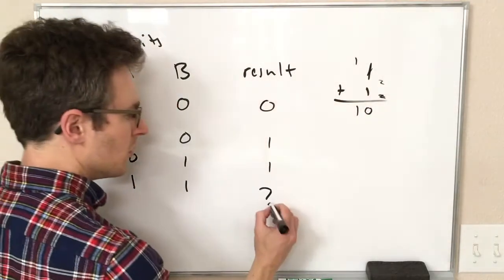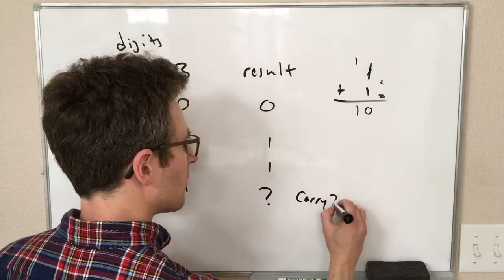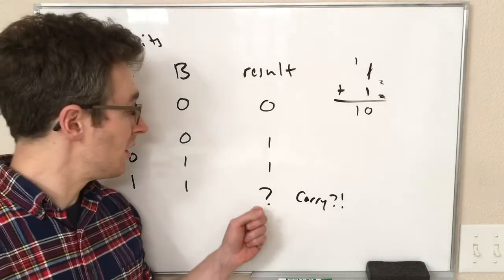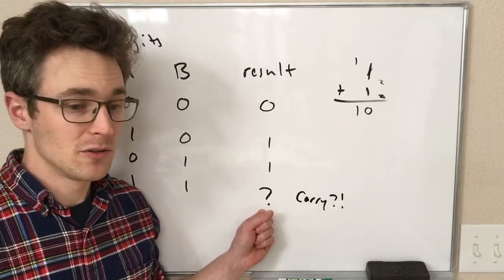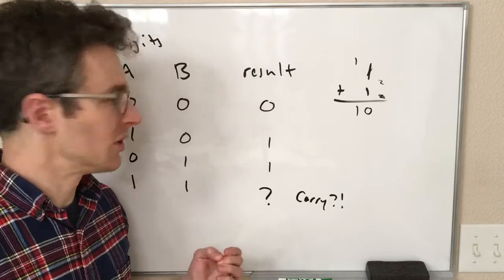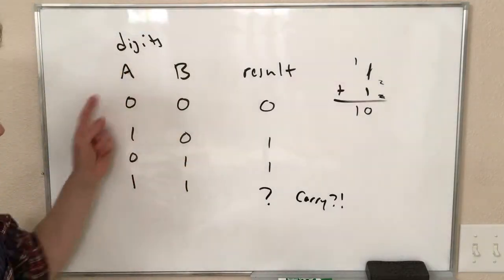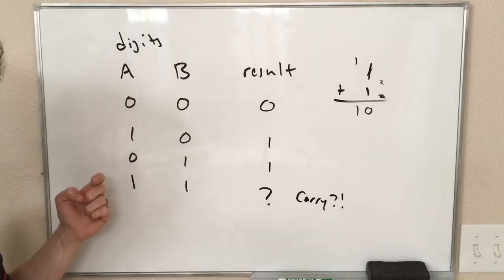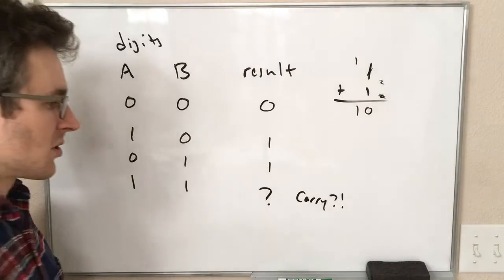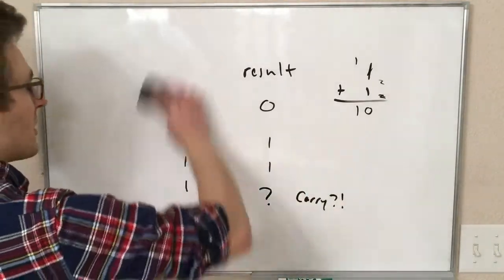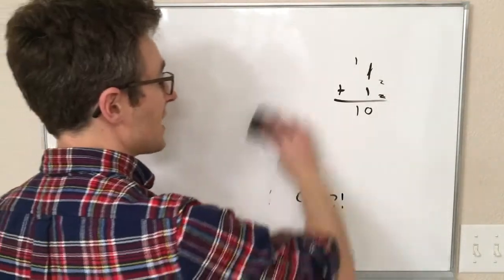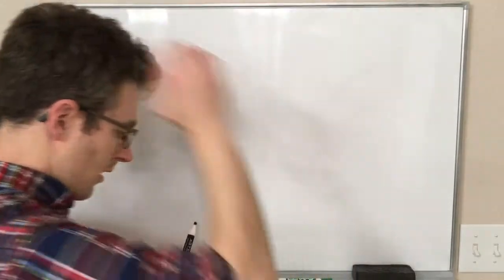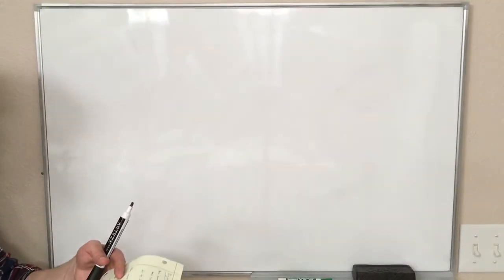So we need to be able to carry our digits. So we need somewhere to put this carried bit to be added to the next one. And similarly, if this operation was happening in the middle of some long number, it's possible that we also have a carried bit to add to this. So the full operation actually has three inputs, the two digits, and then a bit that can carry into this.